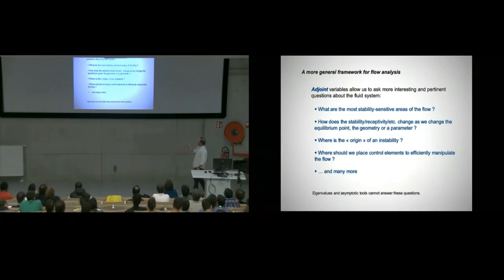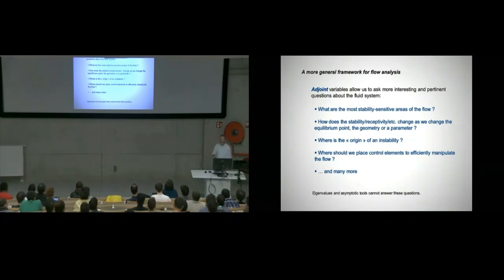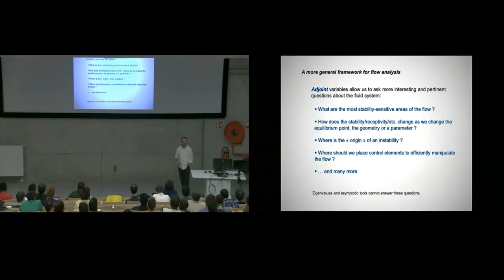For example, what are the most stability sensitive areas in the flow? The adjoint will point to that. Does the stability receptivity change as we change the equilibrium point, as we change the geometry, as we change a parameter? All these things can be asked because we have gradient information. You would have to do another calculation with a higher Mach number if you want to know whether it's getting better or worse. Here, we don't. I'll show you examples where we can get parameter studies at almost no cost whatsoever.